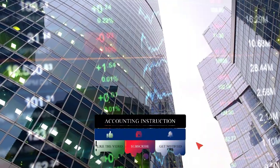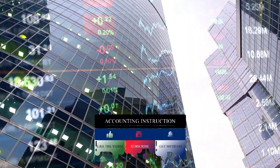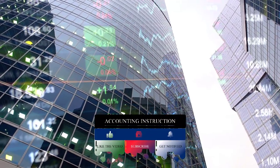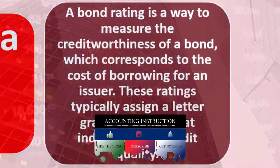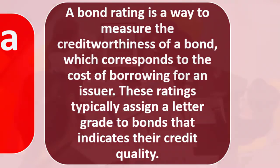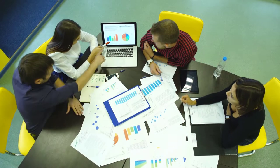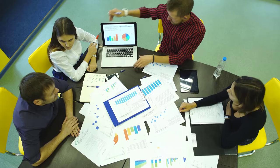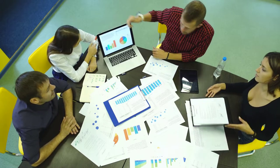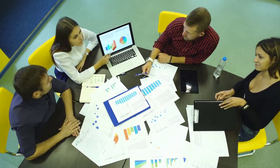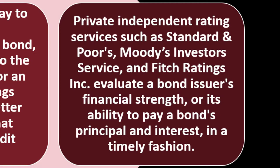If we're investing and we have the choice between something with very little risk like a government bond versus a corporate bond with higher risk, we're going to invest in the government bond all else equal. That means if a corporation wants to generate money by issuing bonds, they're going to have to provide a higher return. Private independent rating services such as Standard and Poor's, Moody's Investors Service, and Fitch Ratings Incorporated evaluate a bond issuer's financial strength.